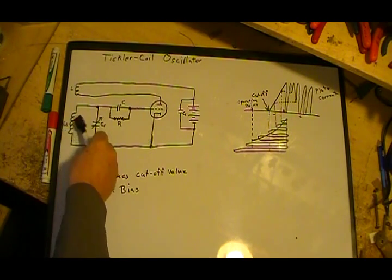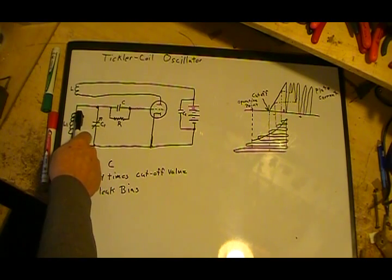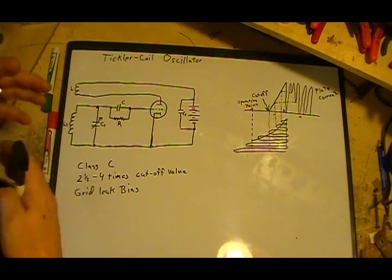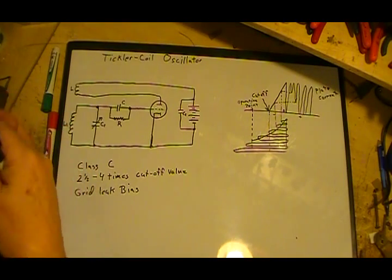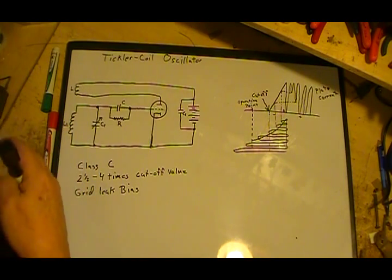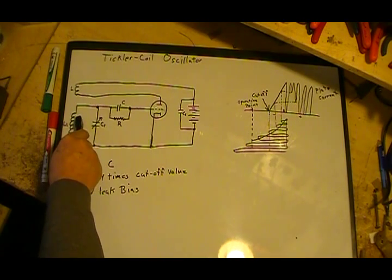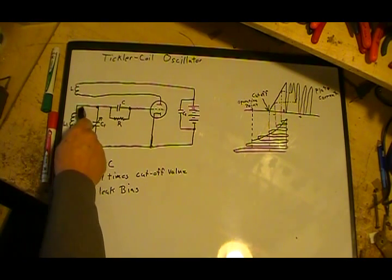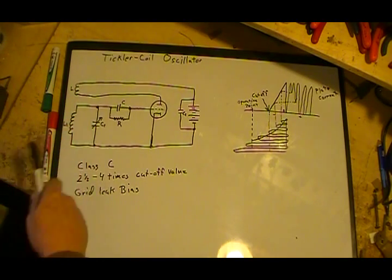As the field expands, it starts cutting right through L1, which then develops a voltage in L1. The coils L1 and L are wound in such a way that the voltage developed in L1, the direction of the winding is such that when that voltage is developed, it's in the same direction as this voltage so they add.